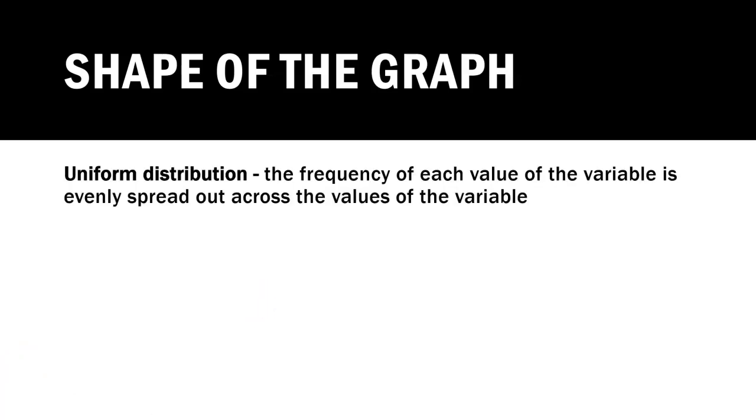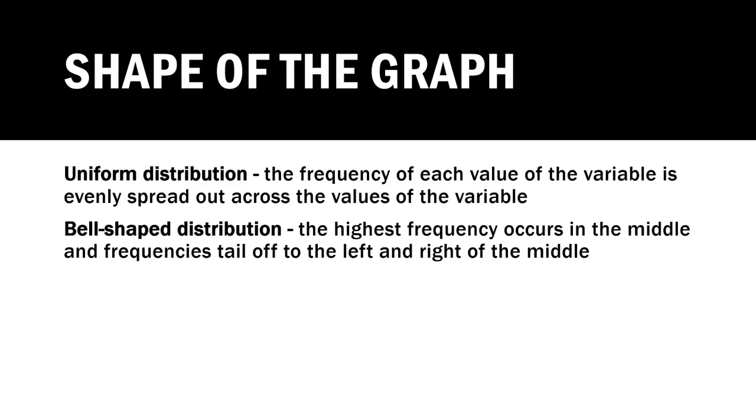Before we create our relative frequency histogram, what I want to do is discuss the shape of the graph. So once you create your histogram, what we do is we look at the shape of the graph and we talk about whether it's skewed or not. There are four different categories of the shape that we can describe. The first one is uniform distribution.